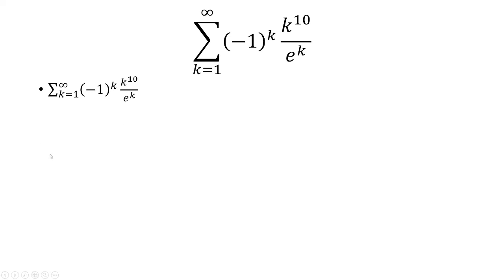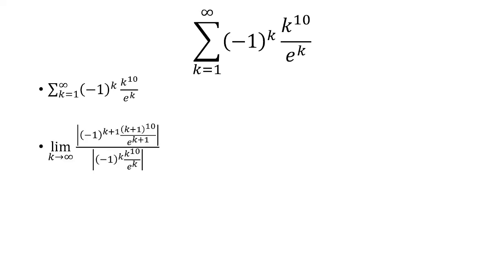So we're going to use a ratio test. Let's look at the (k+1)th term over the kth term. Now the negative 1 to the k and the negative 1 to the k plus 1 will disappear since we're looking at the absolute value. And we no longer need the absolute value because we know that e to the k and k to the 10th are positive.